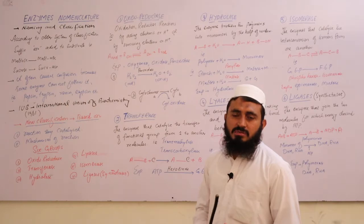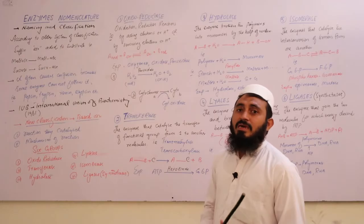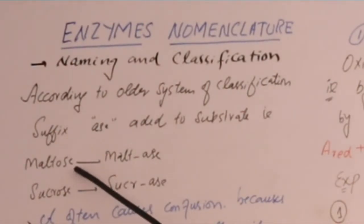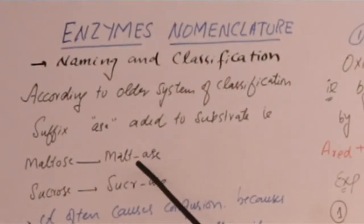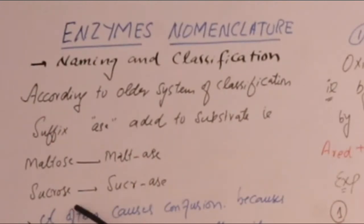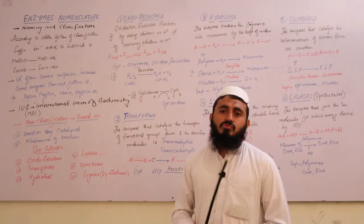In the older system, when there is a substrate molecule, you add '-ase' as a suffix at the end to form the enzyme name. For example, maltose is a substrate — adding '-ase' gives maltase. Similarly, sucrose becomes sucrase (sucrase enzyme).